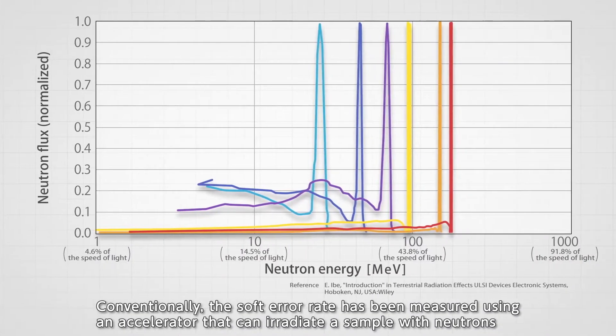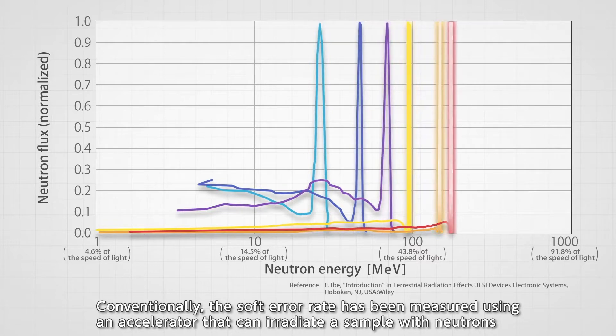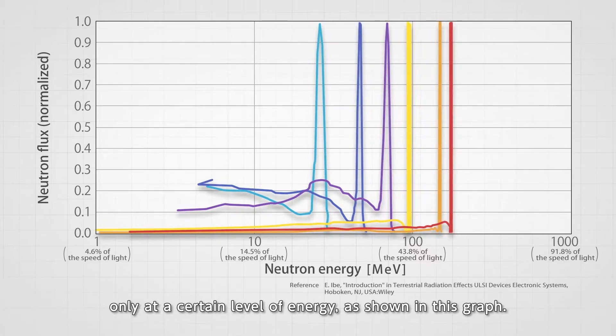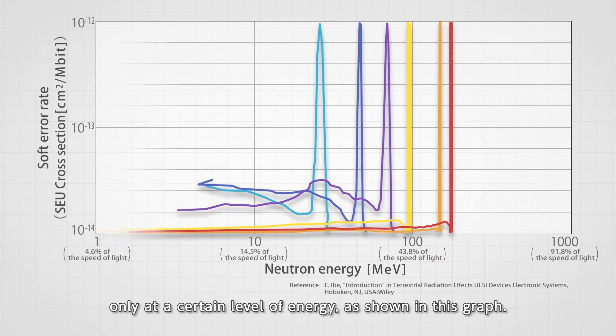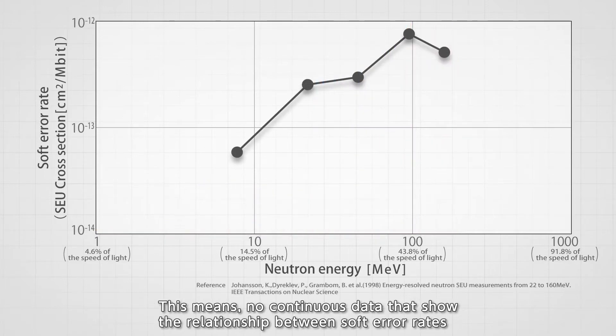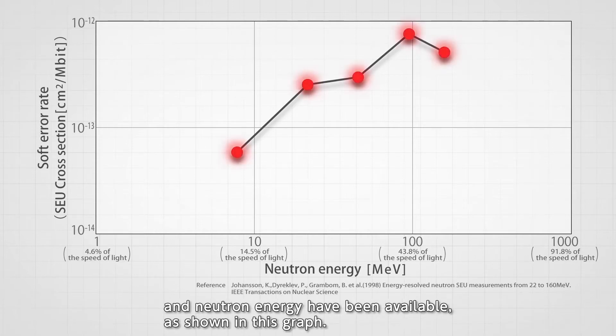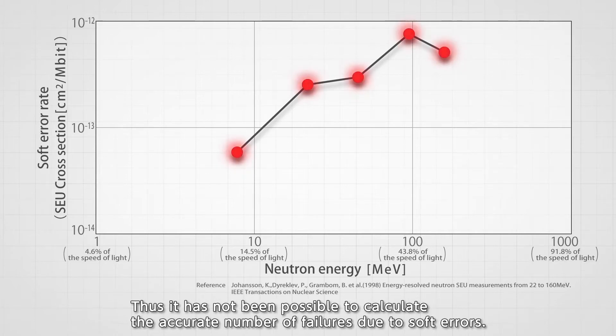Conventionally, the soft error rate has been measured using an accelerator that can irradiate a sample with neutrons only at a certain level of energy. This means no continuous data that show the relationship between soft error rates and neutron energy have been available. Thus, it has not been possible to calculate the accurate number of failures due to soft errors.